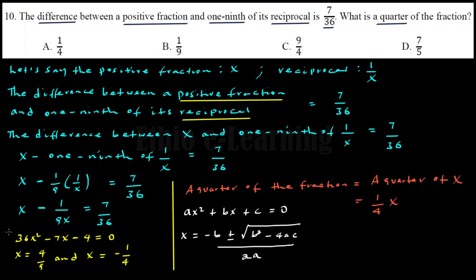We have two values for x. But since x must be a positive fraction as stated in the problem, we can reject x equals negative 1 over 4 because it's a negative fraction.